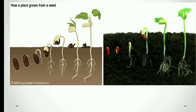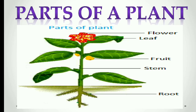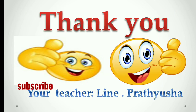Yes children, so far we have discussed about different parts of a plant. Let us recall them. What are they? Roots, stem, leaves, flower, and fruits. Thank you, children.